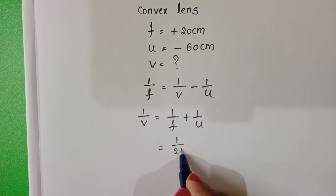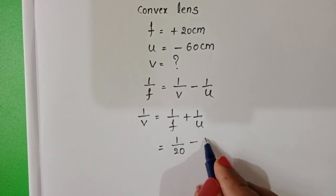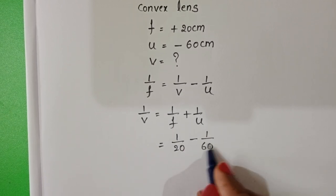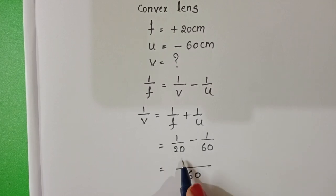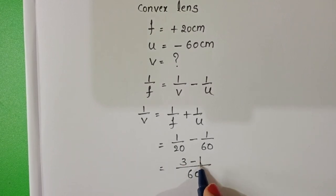Focal length is 20 cm, object distance is negative 60 cm. LCM is 60. 3 minus 1 is 2.